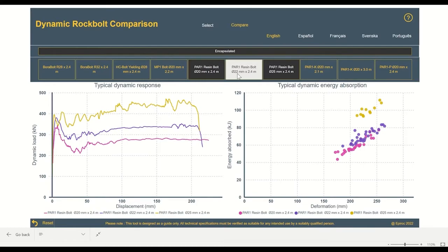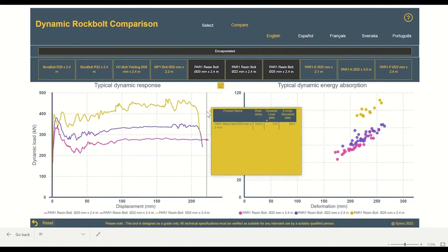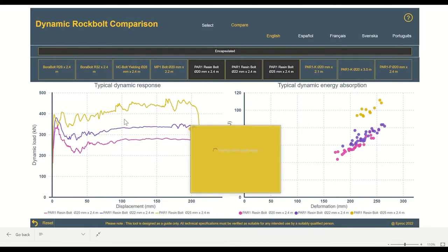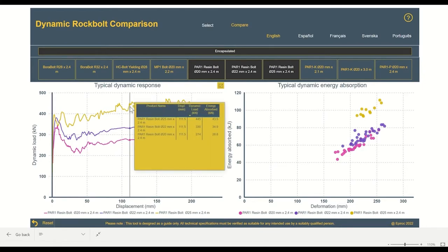Just something to note, we've tried to keep the length of the bolts consistent. This just simplifies the comparison, but all these bolts are available in a number of lengths. So if we come in and have a look on the dynamic response graph, we can see that we have three graphs here, all providing different load capacity.